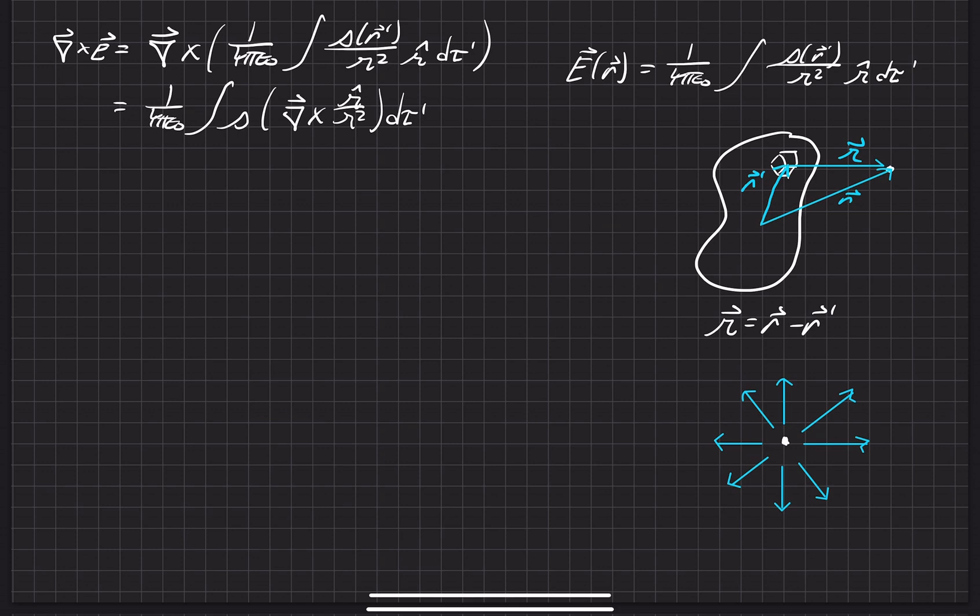And next, we'll just go ahead and define this r̂'/|r'|² as a v vector. And this is just to be consistent with the inside cover of the Griffith textbook, because what I'm going to write next is the definition of the curl in spherical coordinates, because that's what we're working with here, since we're working with a volume charge density.